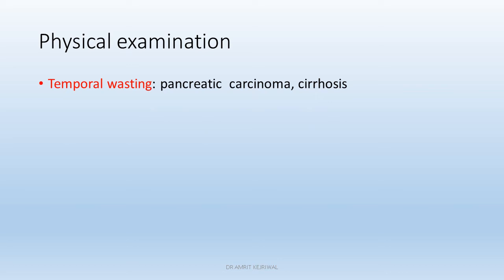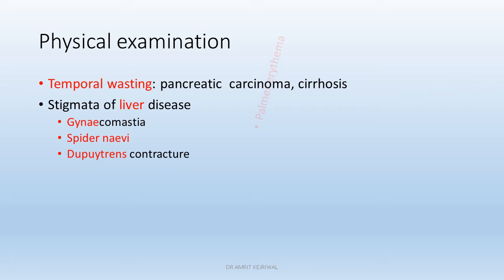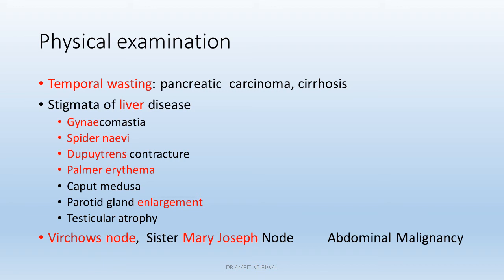Coming to physical examination — if the patient has temporal wasting, think of pancreatic carcinoma or cirrhosis. The patient may have stigmata of liver disease, which include gynecomastia, spider nevi, Dupuytren's contracture, palmar erythema, caput medusae, parotid gland enlargement, and testicular atrophy. All these are the stigmata of liver disease.